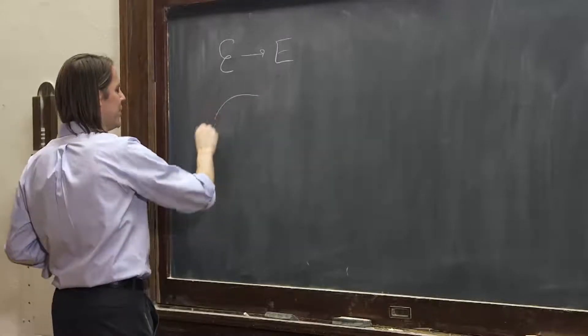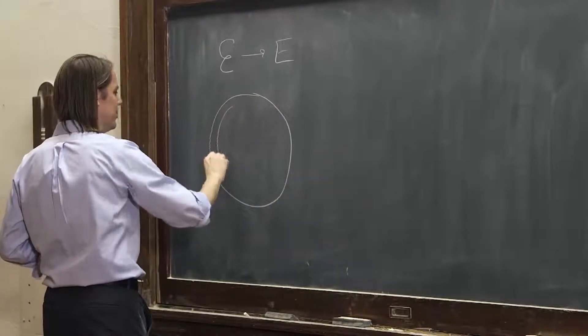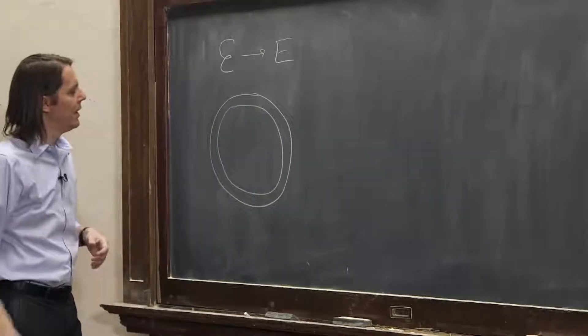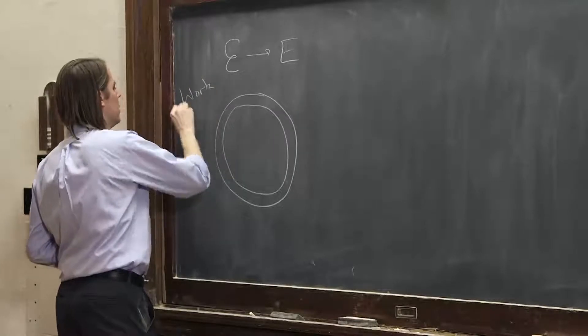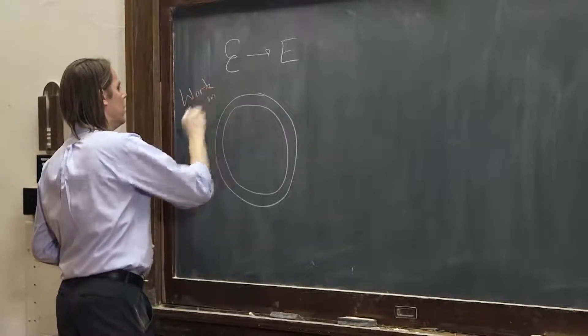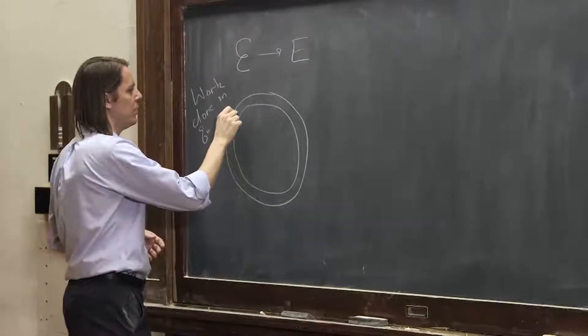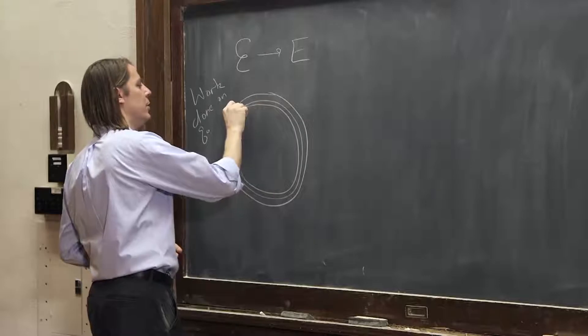So the way to do it is to go ahead and think about it with the loop there. I won't draw the magnetic field, but just know that there is a magnetic field changing inside the loop. And we think about the work done on a charge, say Q0, as it goes around the loop. It's going to go all the way around.